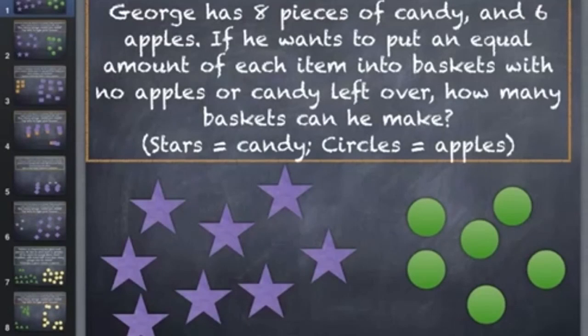It says, George has eight pieces of candy and six apples. If he wants to put an equal amount of each item into baskets with no apples or candy left over, how many baskets can he make? So the stars here represent our candy, and the circles represent our apples. You can see that there is a total of eight stars or candy and six circles or apples.